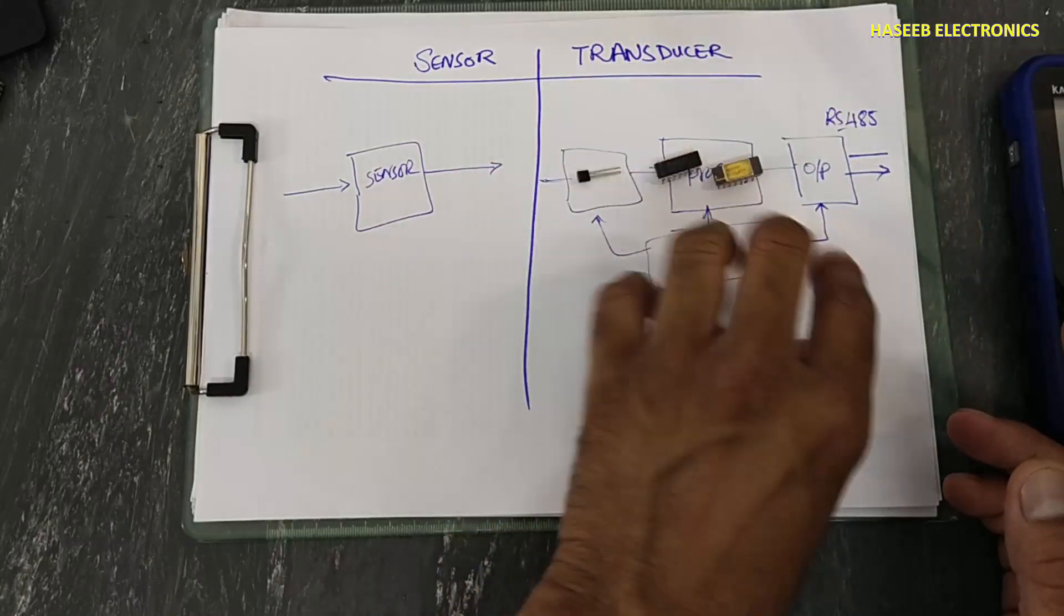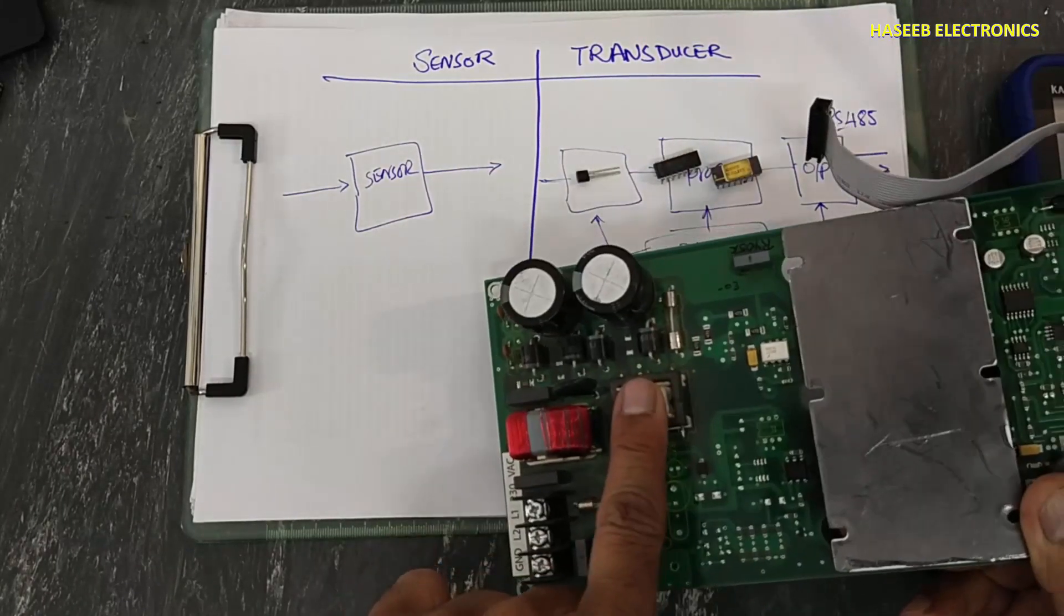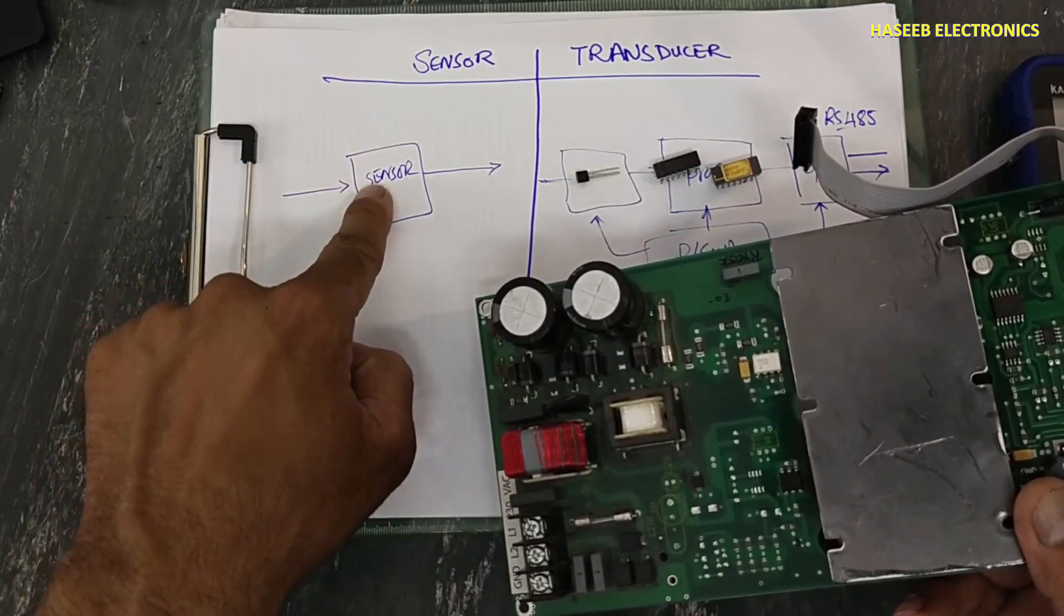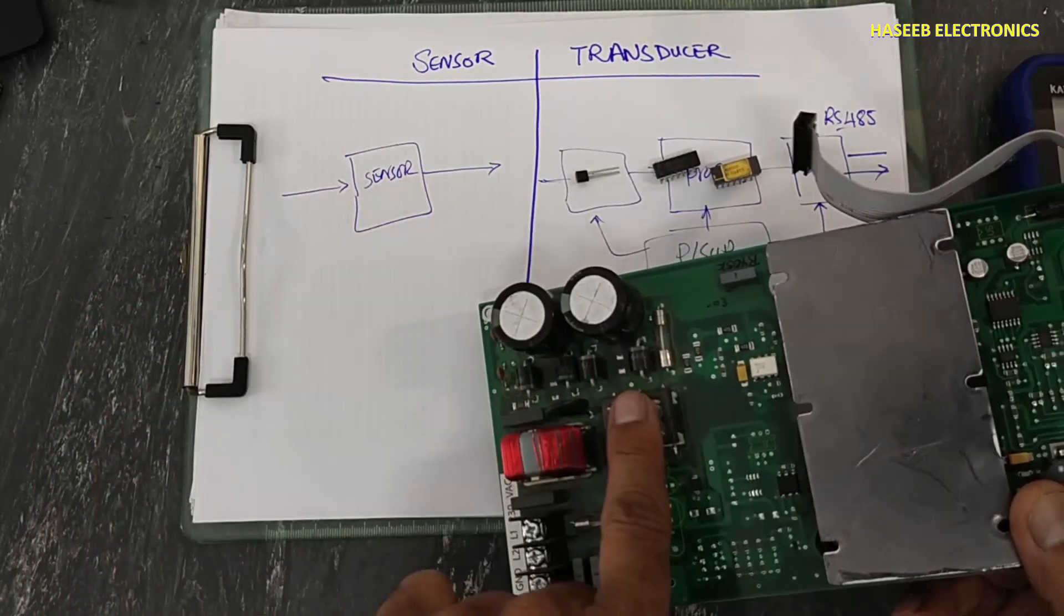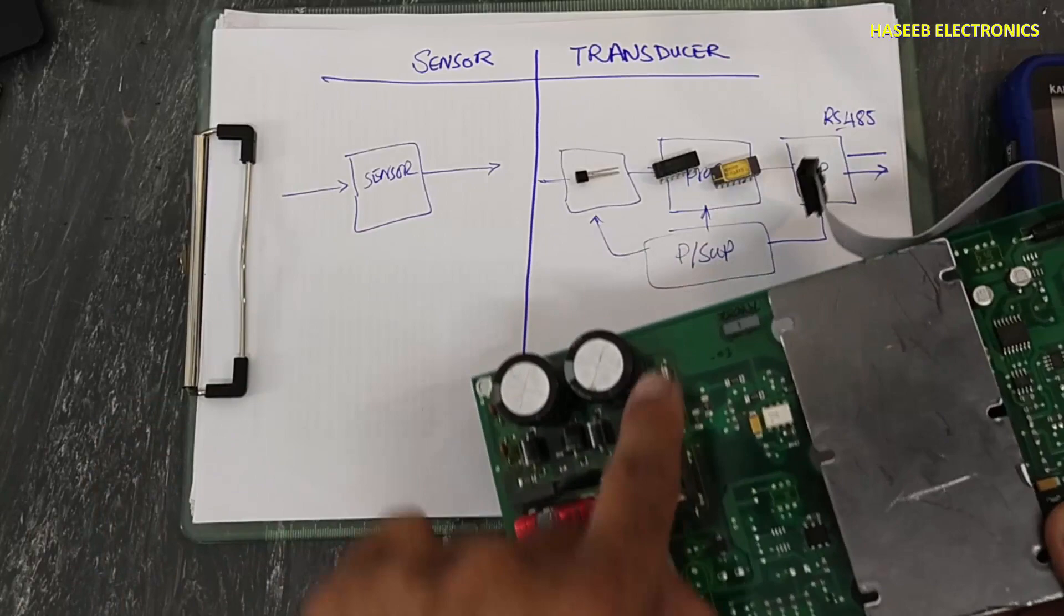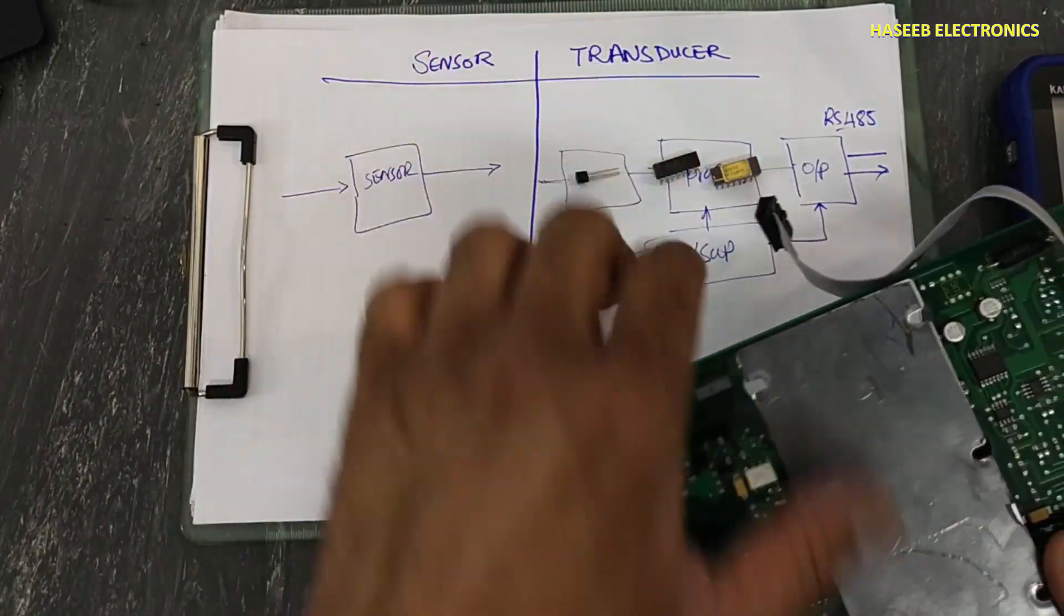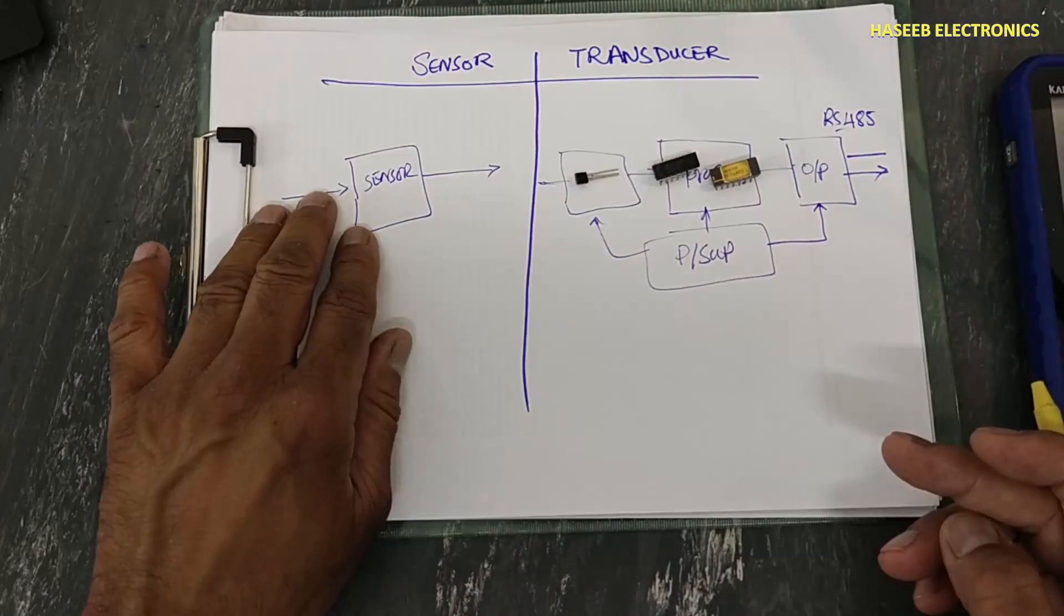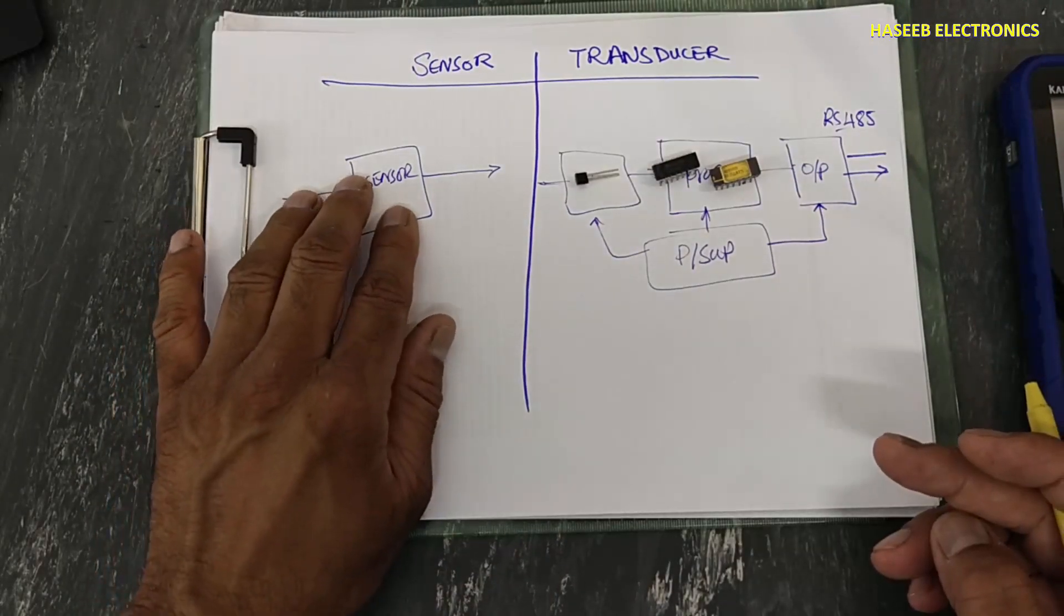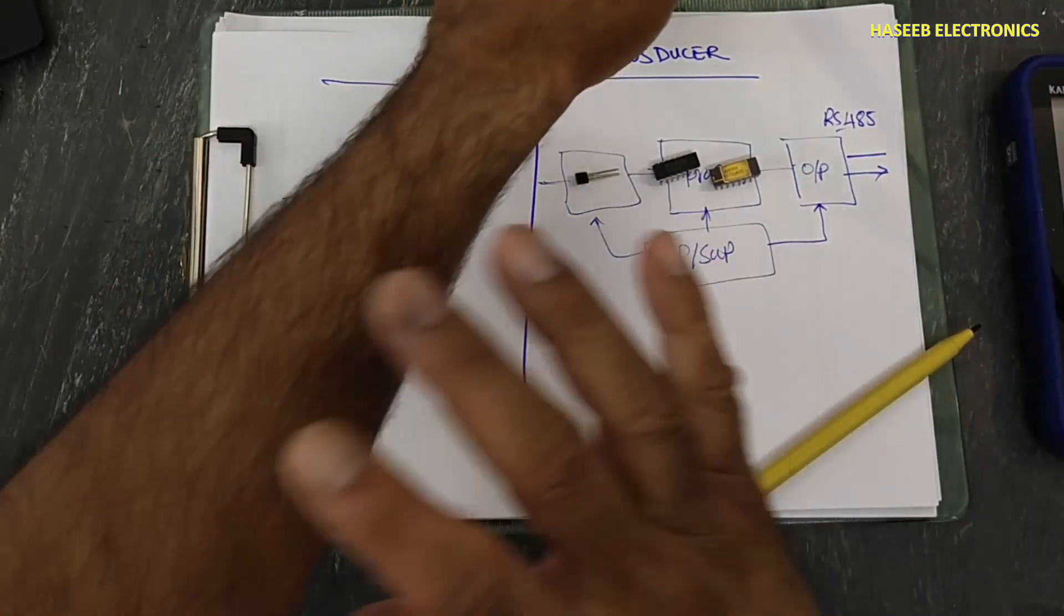This current transformer here is working as a sensor, but when this current transformer will come here, it will be called current transducer. Pressure sensor was here, pressure sensor, but when we will place pressure sensor here...